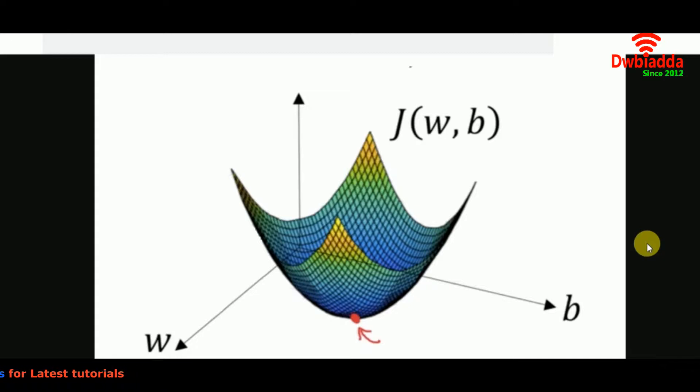The image that you have in front of you is a three-dimensional image of a gradient descent. What that specifically means is the global minima is the point where you're having the minimum error.